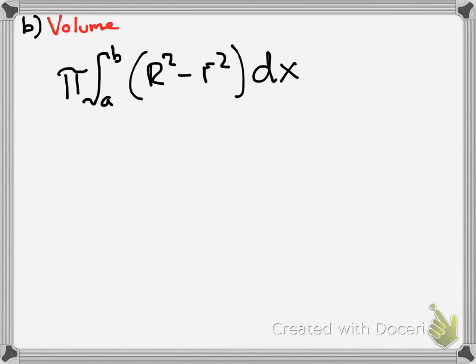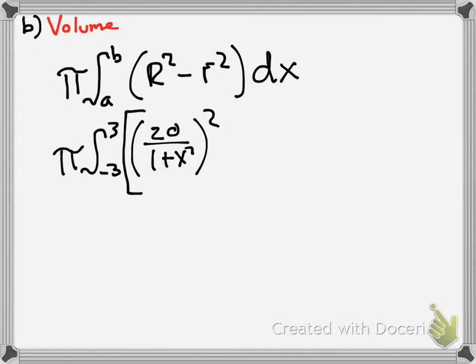And basically, you would just use that formula. So we know that our limits of integration are negative 3 to 3. And our first function was 20 over 1 plus x squared. Square the entire thing. A lot of people forget to square that. They usually just square it once, but you have to square both big r and little r. And 2 squared. And dx.